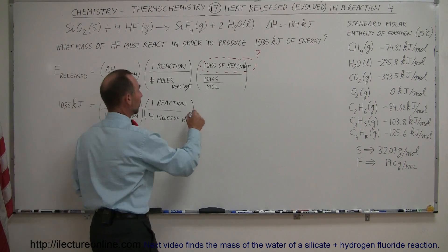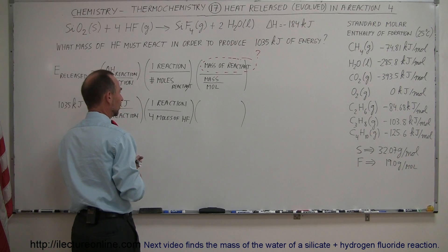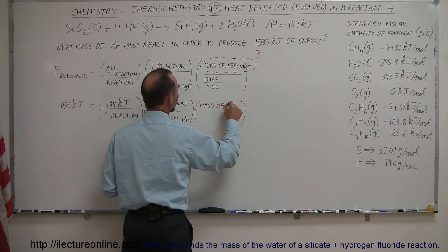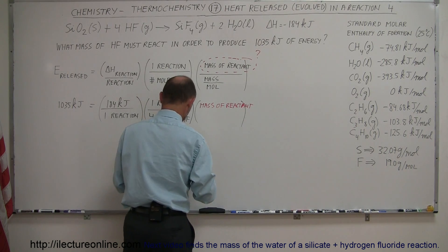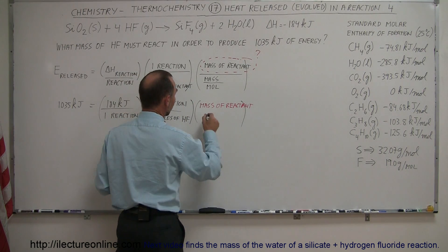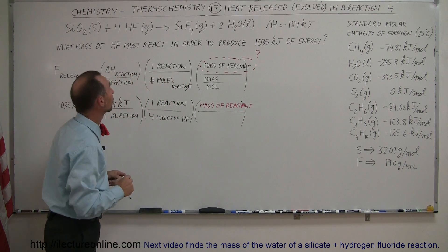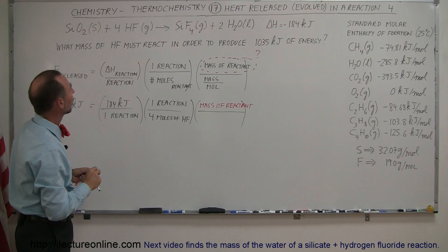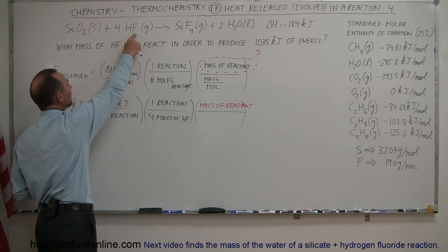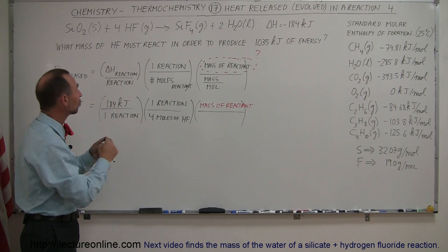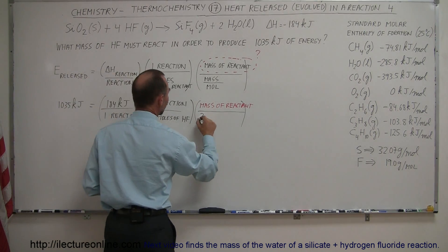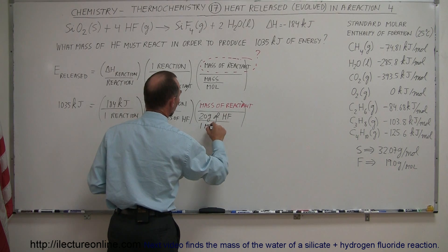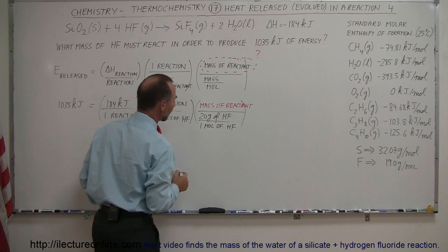The mass of the reactant is what we're looking for — highlighted in red. We then divide by the mass per mole. The molar mass of hydrogen is 1.008, so approximately 1 gram per mole. For fluorine it is 19 grams per mole. Combined, that's 20 grams per mole, so 20 grams of hydrogen fluoride per one mole of hydrogen fluoride.